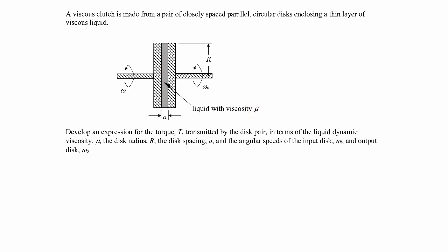In between these disks is a viscous liquid with viscosity mu. The left disk is rotating at some rotational speed omega i, and through viscous stresses, it causes the right-hand disk to rotate at angular velocity omega o, for i coming in and o going out. The disks are spaced a distance a between them, and we're asked to find the torque transmitted between the disk pair.